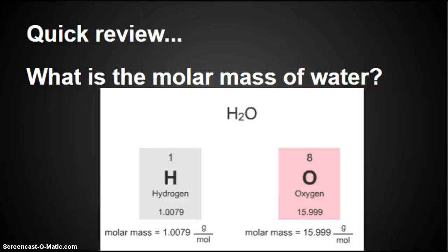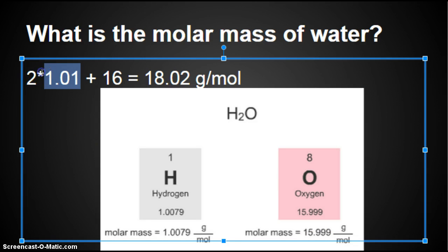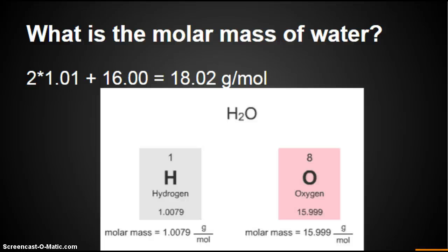Quick review. What is the molar mass of water? Molar mass is mass of a mole. Hydrogen has a molar mass of 1.0079 grams per mole. Oxygen has a molar mass of 15.999 grams per mole. When we round to hundredths, hydrogen is 1.01. I multiplied it by 2 because every water molecule has 2 atoms of hydrogen, plus my oxygen. When I add that up, I get 18.02 grams per mole.